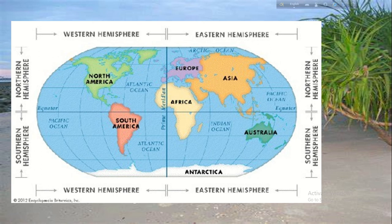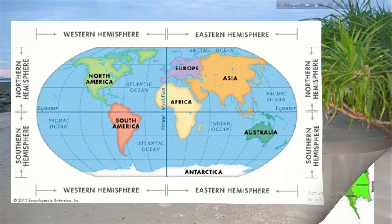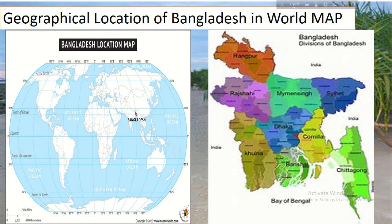Ours is a country of rivers and agriculture. Bangladesh is encircled by India on three sides. Follow this map showing the geographical position of Bangladesh in the world. The red-marked area shows Bangladesh, located in the Southern part of the Asian continent. To the west of Asia is Europe, and here is Africa. Bangladesh is encircled by India on nearly three sides, and there is a small boundary with the neighboring country Myanmar.